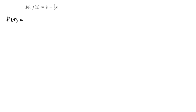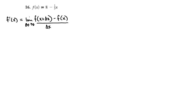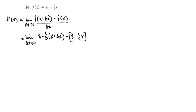f prime of x is equal to the limit as delta x approaches 0 of f of x plus delta x minus f of x, all over delta x. We're going to plug in x plus delta x wherever we see x in the original function. Limit as delta x approaches 0 of 8 minus 1/5 times x plus delta x, minus the whole function in parentheses, 8 minus 1/5 x. That's all over delta x. All we need to do now is expand this out, distribute, and apply the negative sign to the right.